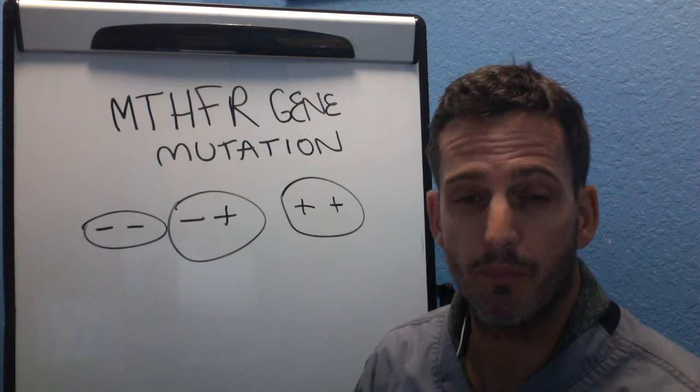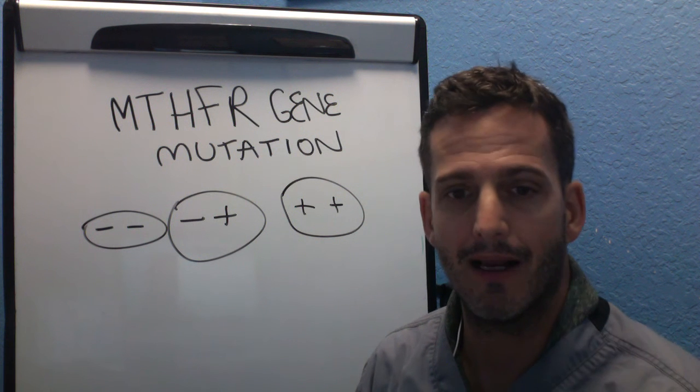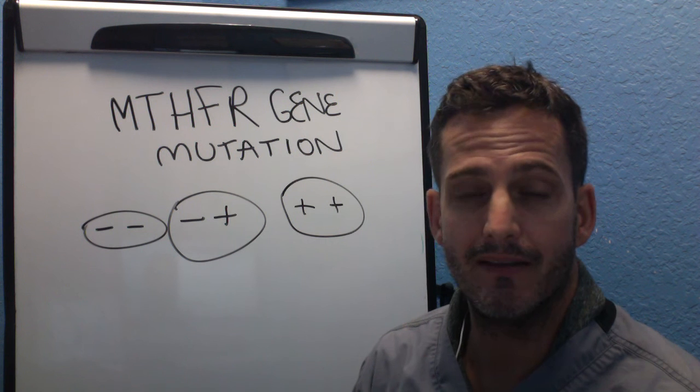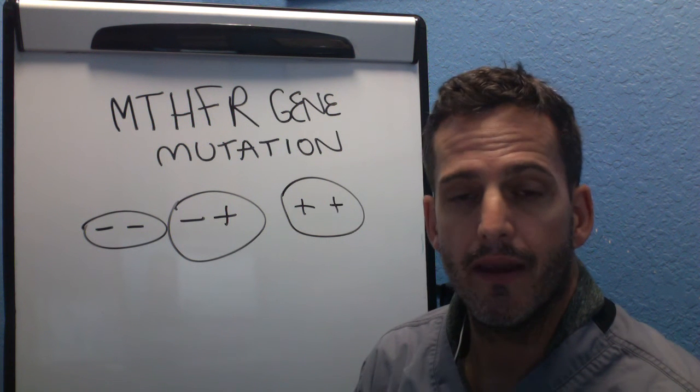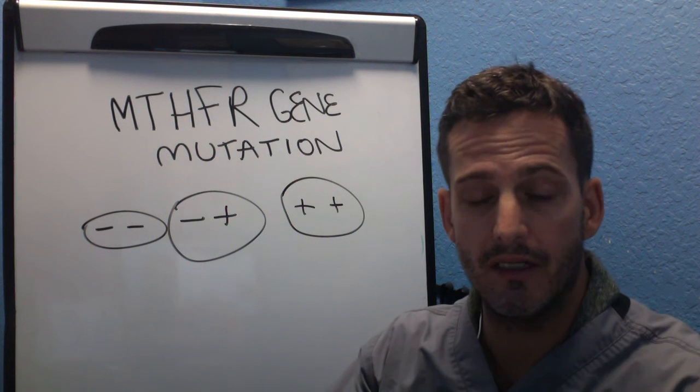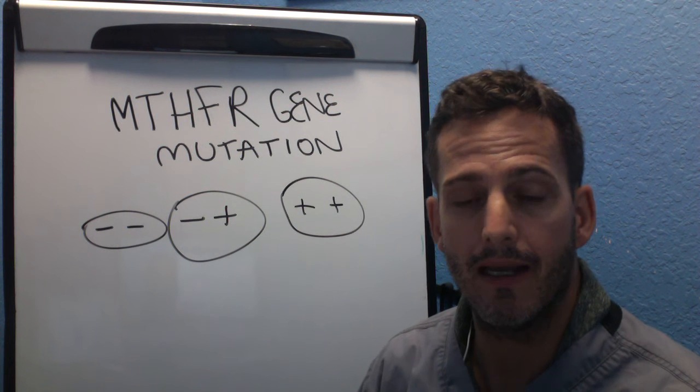So what I want to do is explain to you what an actual gene mutation is, because I think people don't understand that. And the way my mind works is to explain these things in analogy. So think about genes, and what they do is they code for enzymes. Just like a computer person codes for a program, it copies or replicates an enzyme.